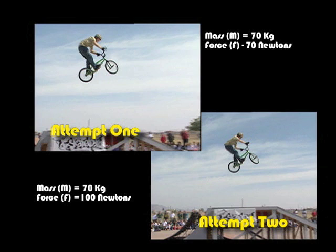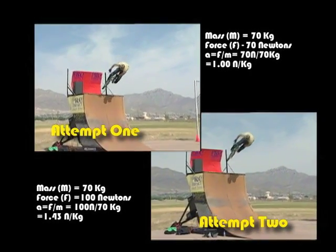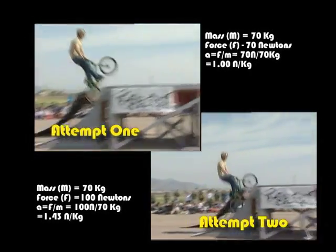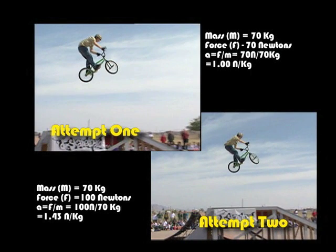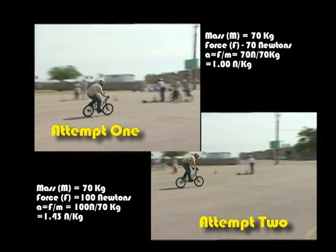On which attempt does the rider produce greater acceleration? How do you know? Since the rider's mass is the same, you divide the first force of 70 Newtons by 70 kilograms, and you get acceleration equal to 1.00 Newtons per kilogram. In the second attempt, you divide the force of 100 Newtons by 70 kilograms, and you get acceleration equal to 1.43 Newtons per kilogram. So the BMX rider's second attempt produces a greater acceleration.